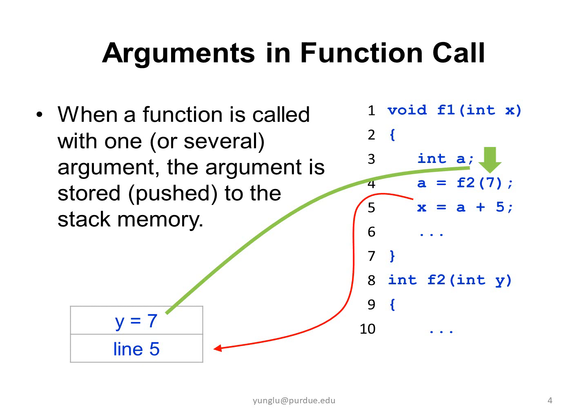In many cases, a function is called with one or several arguments. What is an argument for a function? It is the input of the function. By providing different values to the argument or arguments, the function may behave differently. This is good because the function can do different things based on the input arguments. When a function is called with one argument or several arguments, the value of the argument is stored in the stack memory.